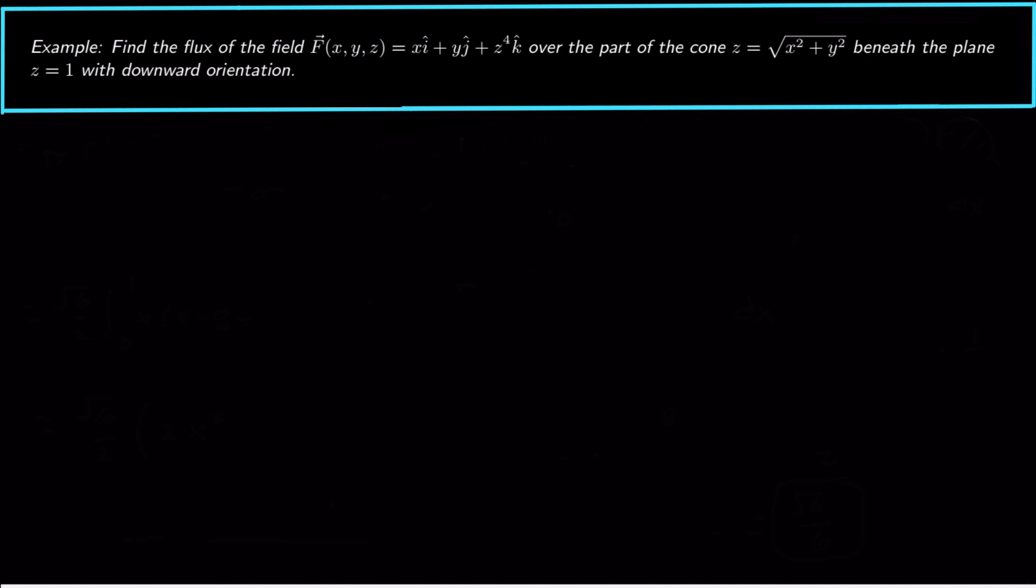We want to have downward orientation to our normal vector, so we want to be finding the flux down. If we look at this cone, we want to have our normal vectors pointing away from the cone or down in the negative z direction. So our normal vectors need to have a negative z component.